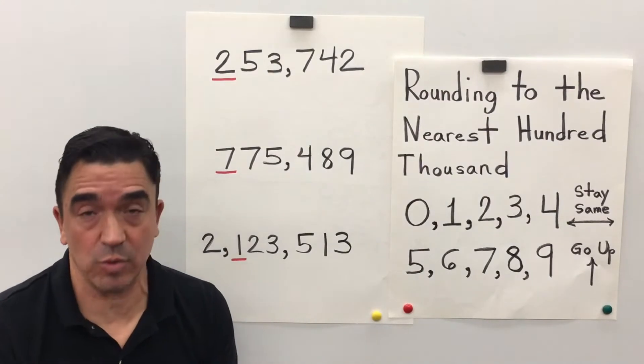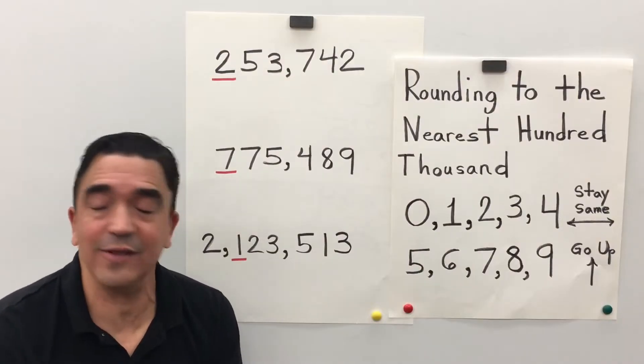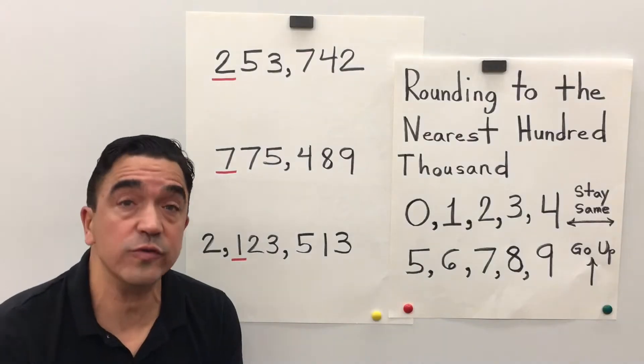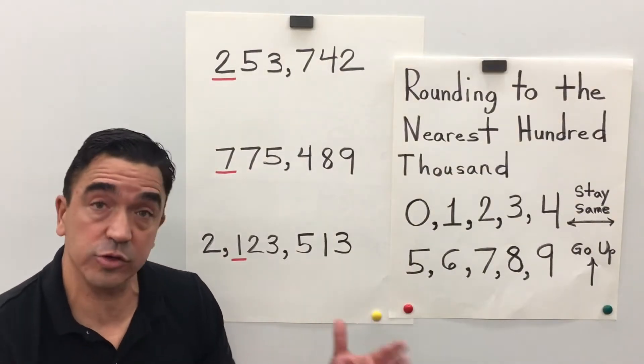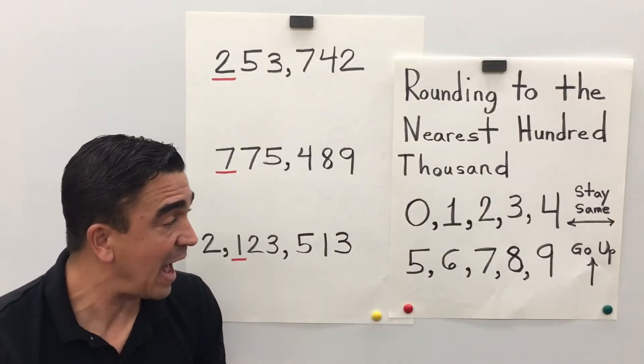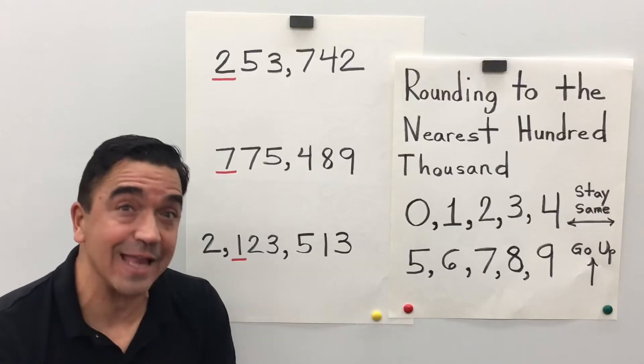Now, before we get started, let me remind you. A digit is any symbol used to write whole numbers: 0, 1, 2, 3, 4, 5, 6, 7, 8, 9.